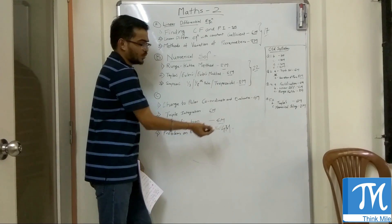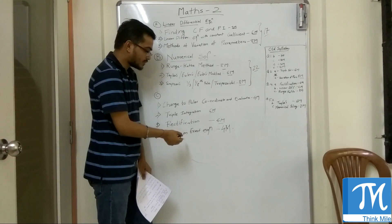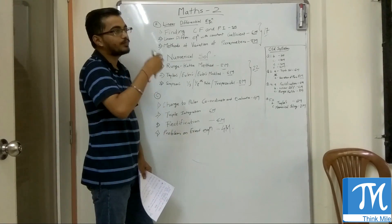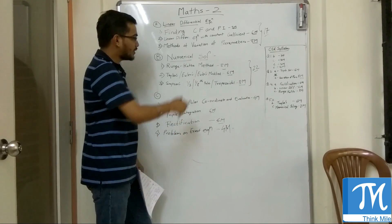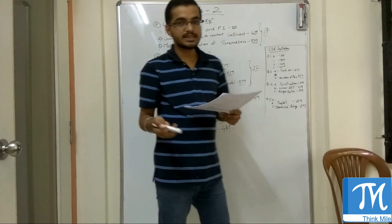And then there is a problem on exact equation for 4 marks. So you can get more problems on exact equation, but this problem is very simple wherein you just have to prove the definition of exact equation. So if you do all these questions, I think you can clear Maths 2 very easily.